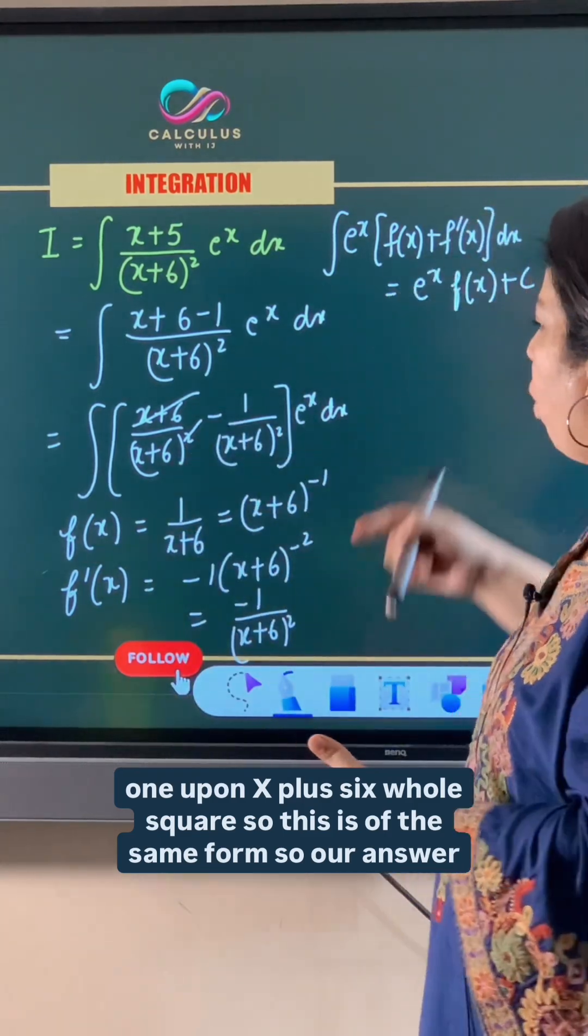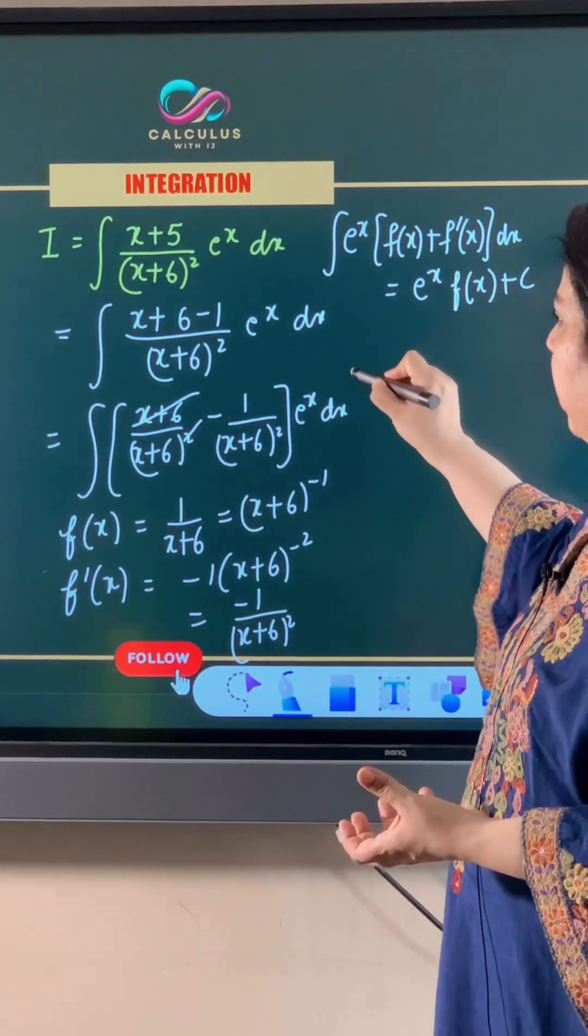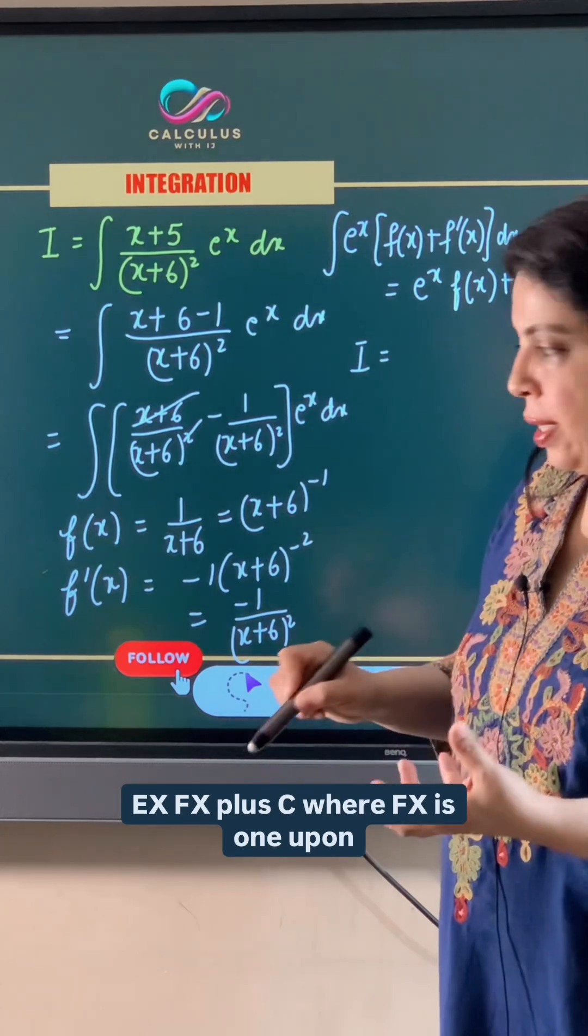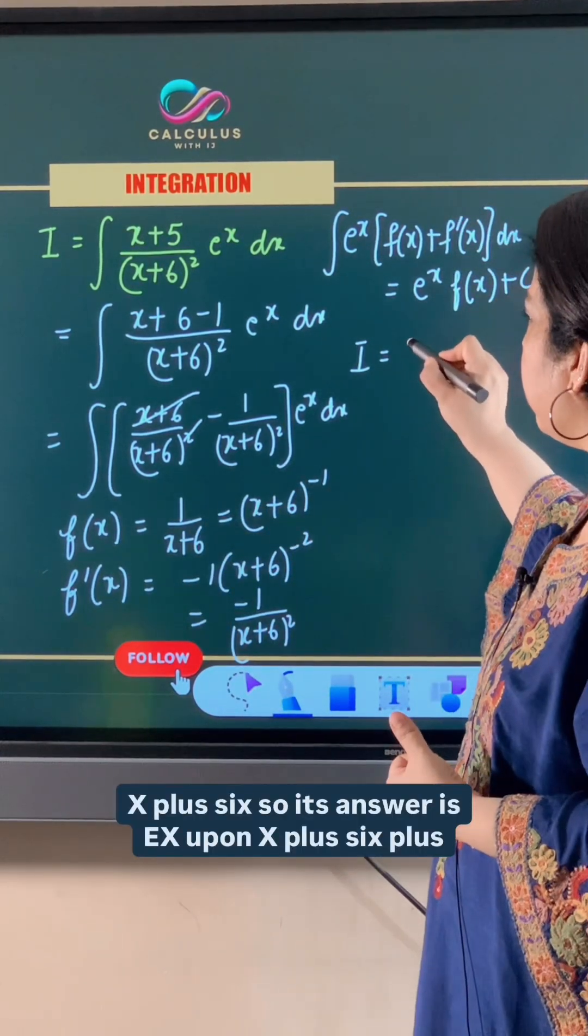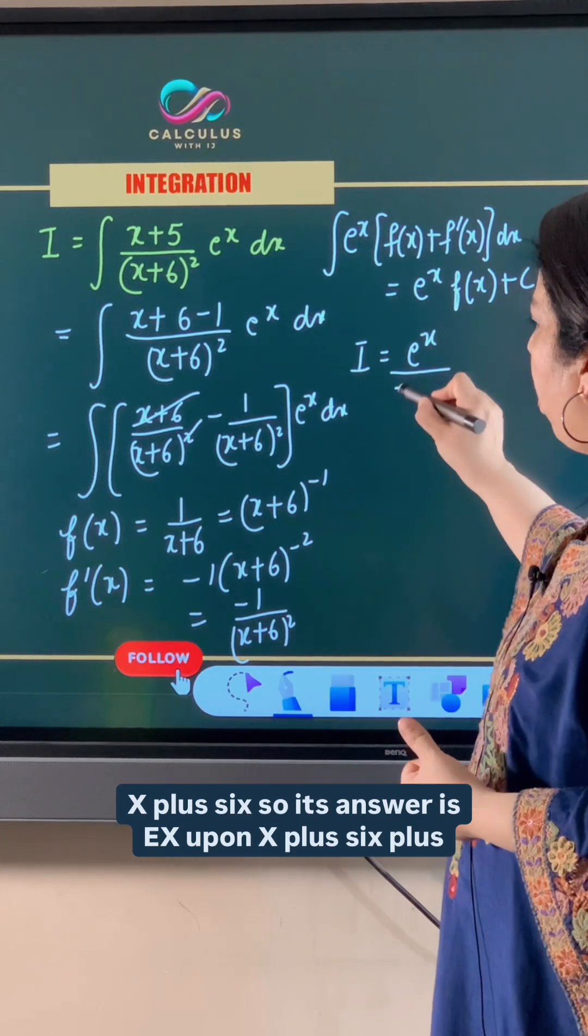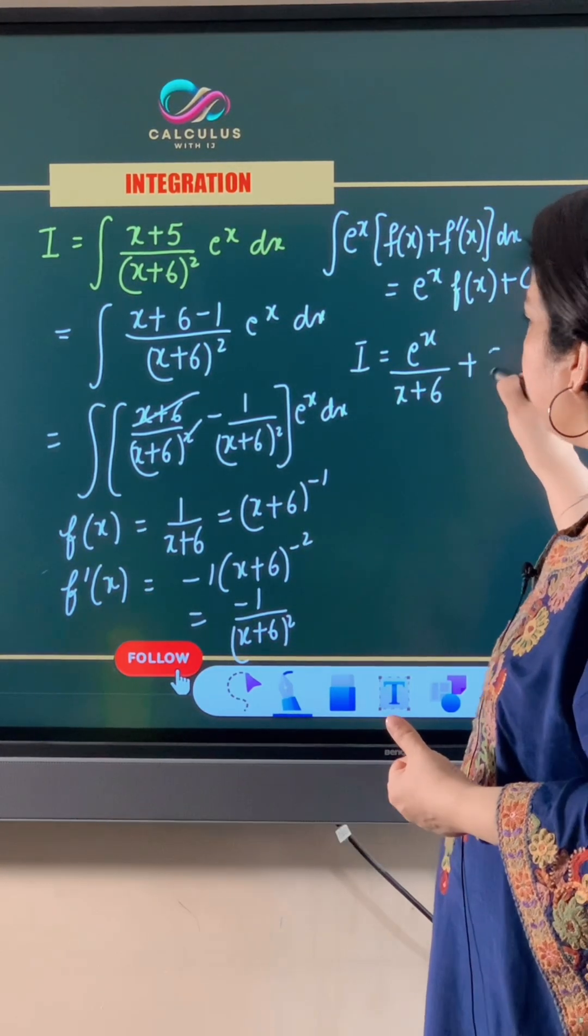So our answer will be e x fx plus c where fx is 1 upon x plus 6. So its answer is e x upon x plus 6 plus c.